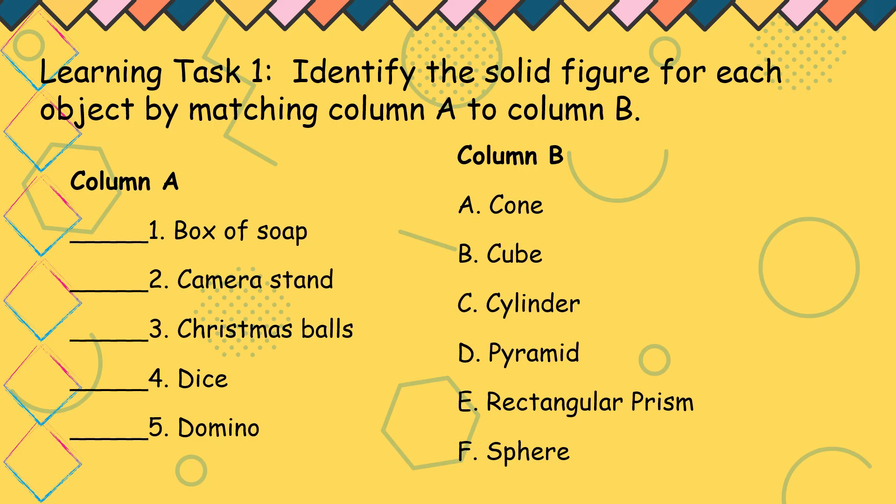Box of soap is letter E, rectangular prism. Camera stand is D, pyramid. Why pyramid? Dahil ito ay parang tripod, so triangle pyramid. Christmas balls is a sphere or bilog. How about the dice, number 4? It is a, of course, cube. And the last one, domino. It is a rectangular prism.